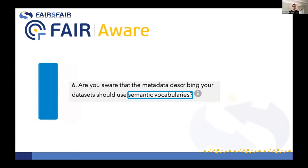Looking at interoperability — researchers use different sources to find different types of data for different purposes. They may carry over search strategies and terminologies from one source to another, even when resources do not use the same vocabularies. The tool highlights that semantic vocabularies are preferred, since content is then unambiguous and can be interpreted automatically by machines, which enhances data search and interoperability across different sources.